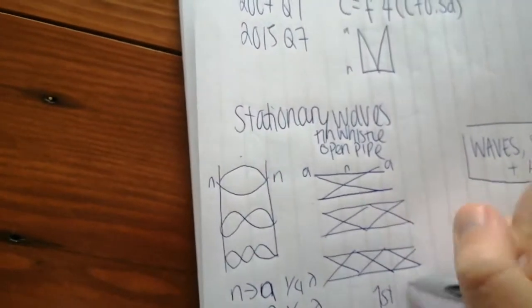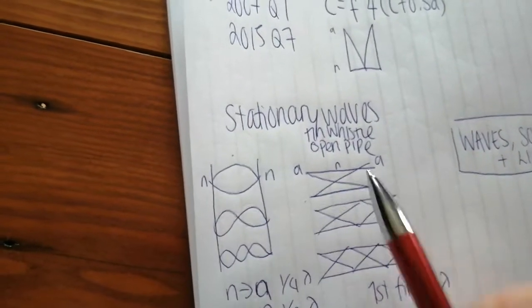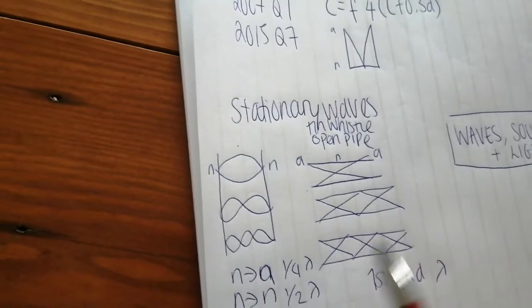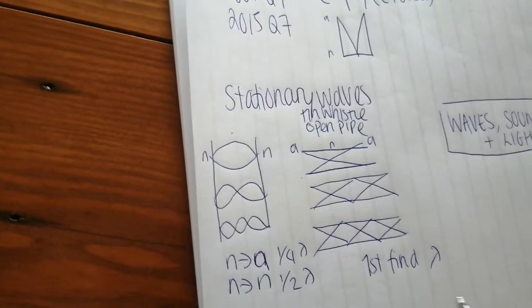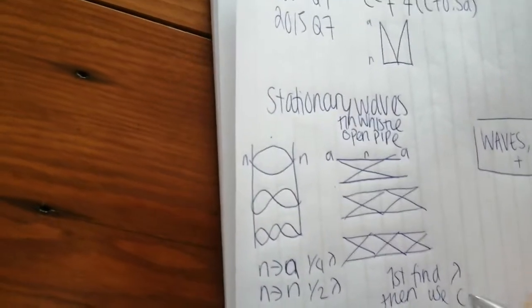So again here, if we have a look here, that's anti-node to anti-node. So that's half a wavelength. Here we've got anti-node to anti-node to anti-node. So it's a full wavelength and so on. So for each of these, the first thing you have to do is find out what the wavelength is. You'll be told the length of the pipe and based on what harmonic it's present in, you can find out the wavelength. Then you normally, in these calculations, will have to use speed is equal to frequency times wavelength.